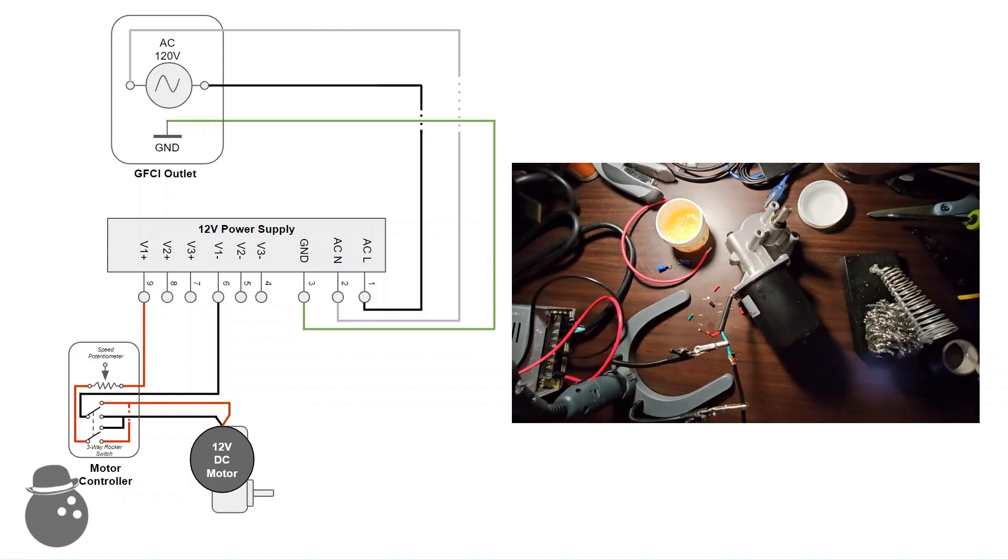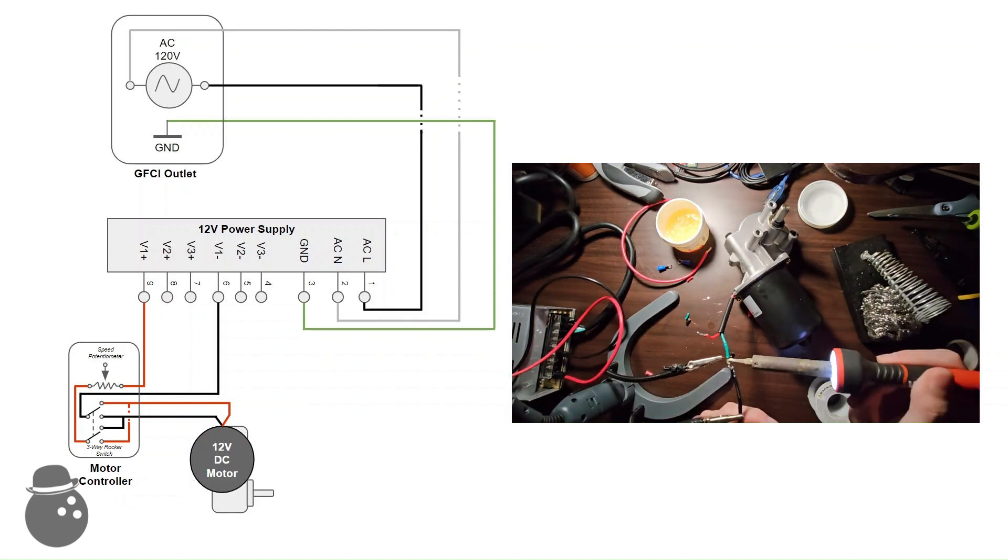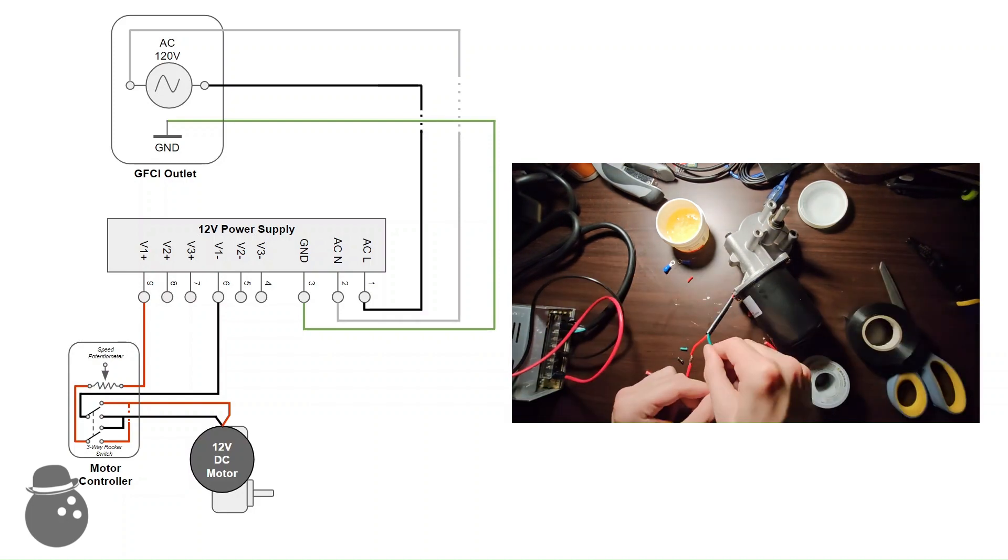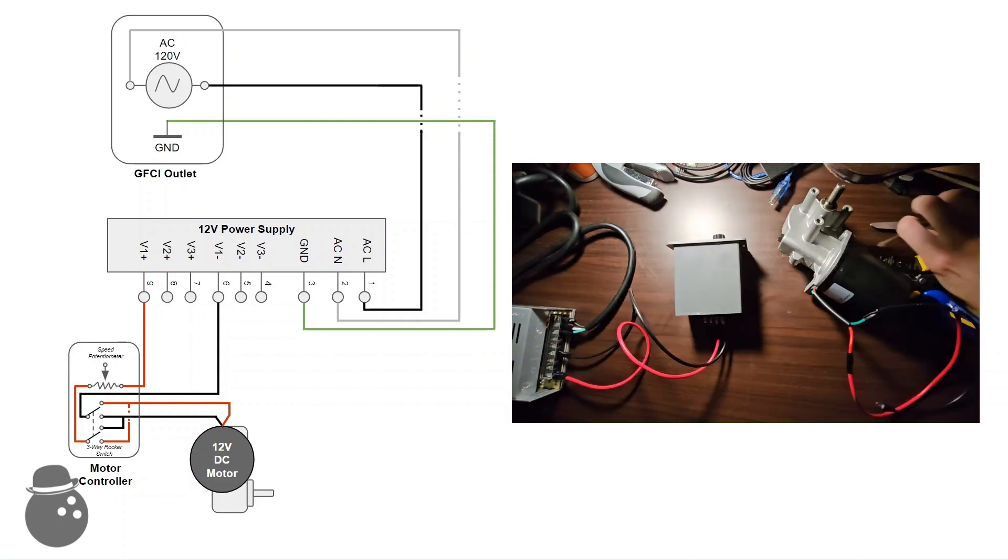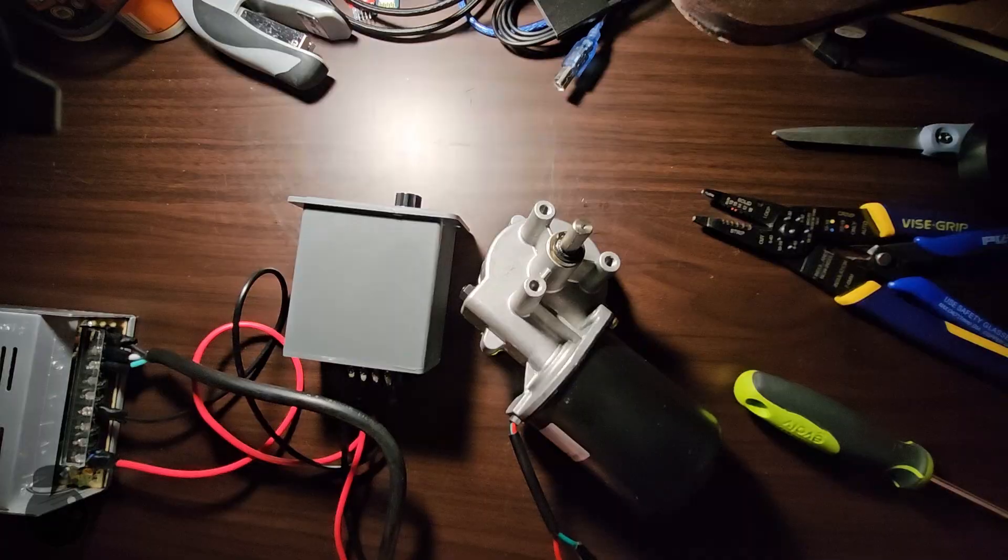Then, the connected motor controller has a knob for adjusting speed, and a three-way switch for forward, off, and reverse. Which I imagine looks something like this internally. The output of that then gets wired to the motor.